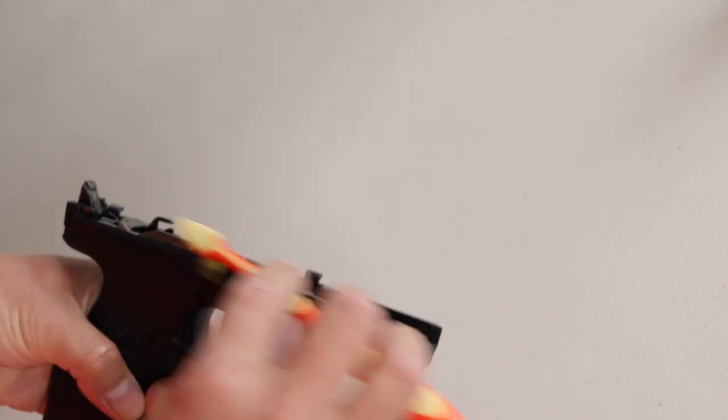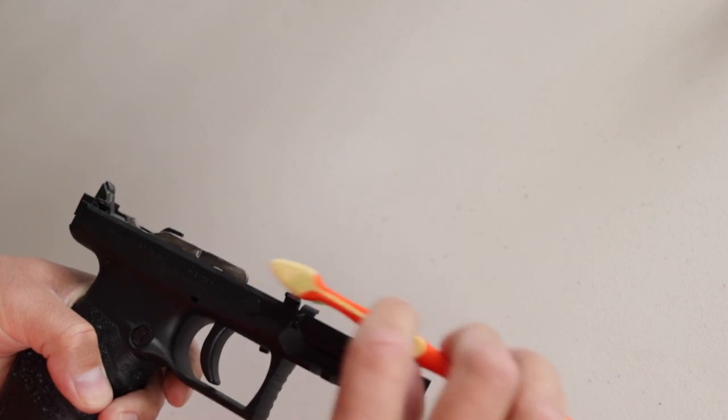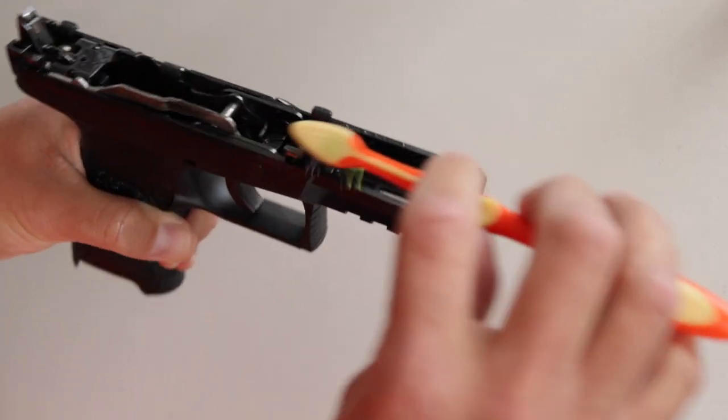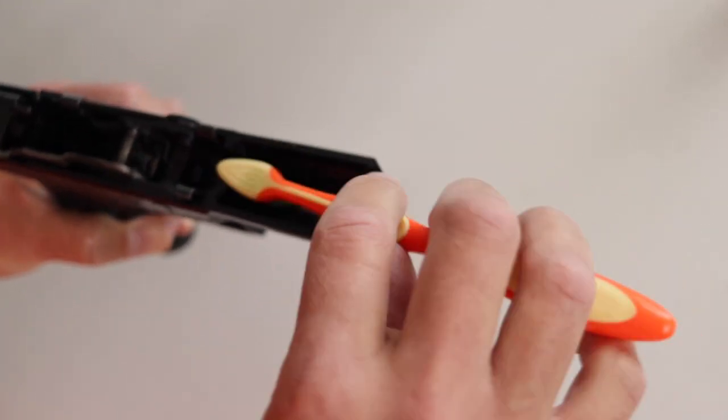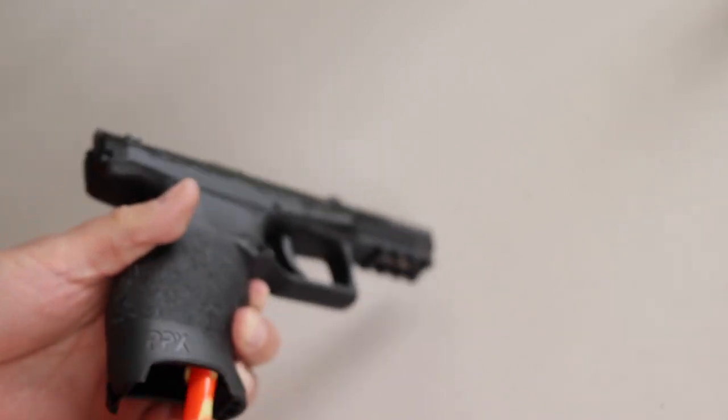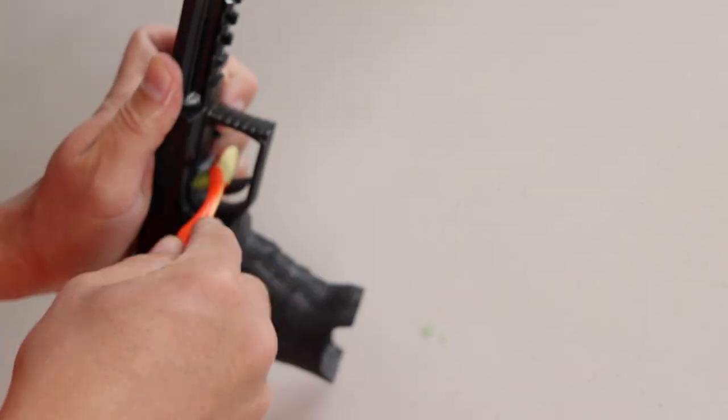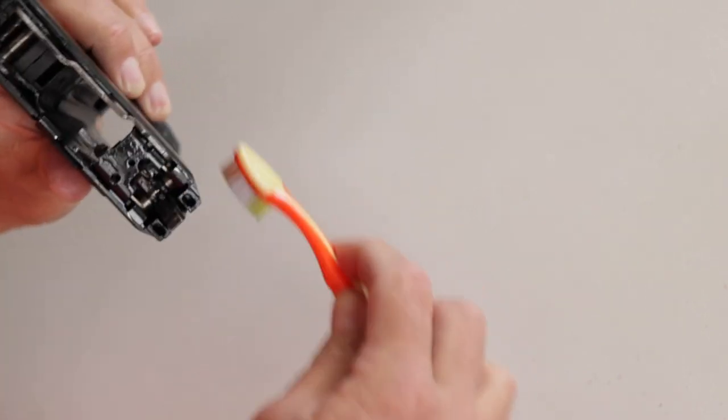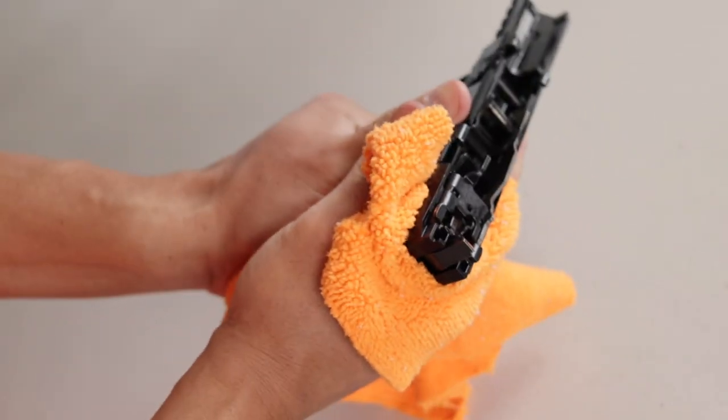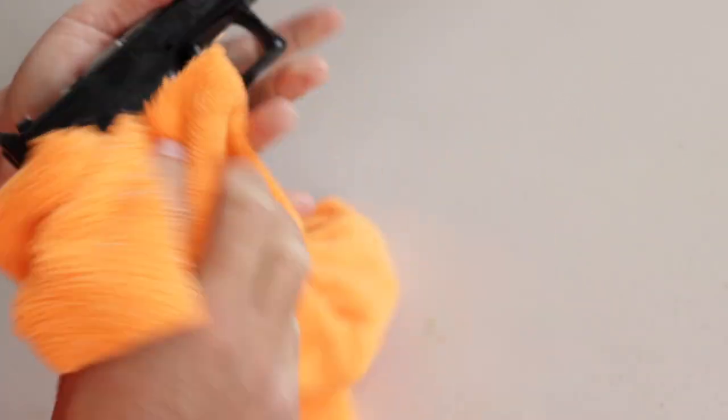You want to be very thorough on the inside of the frame. Pay particular attention to the front and rear rail guides and anything that you see evidence of metal on metal wear. The best way to get the excess CLP off of the grip is just wrap a towel around it and squeeze.